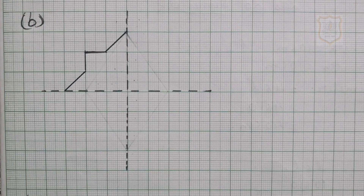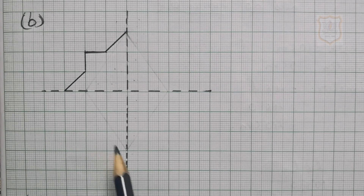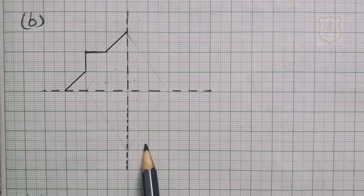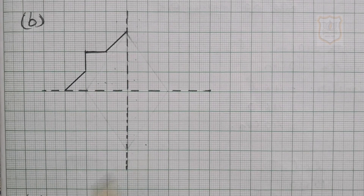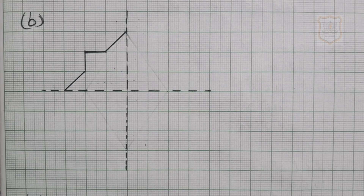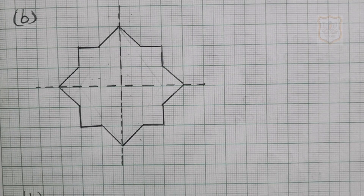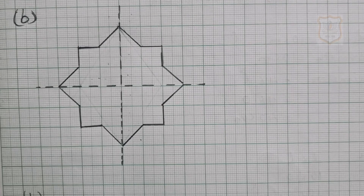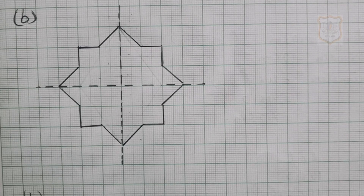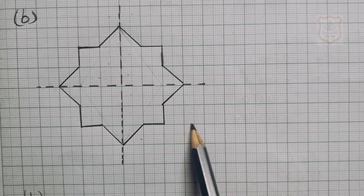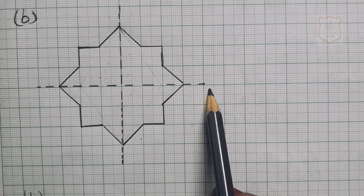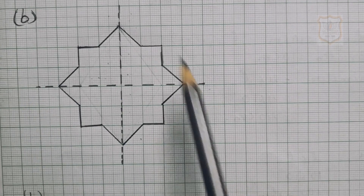So students, shape number B of question number 2 — here also an incomplete picture is given in this way. We have to complete it such that the 2 dotted lines are the 2 lines of symmetry of the given shape. So students, in this way you have to complete this picture, and now you can see that the dotted lines are the 2 lines of symmetry of this figure.